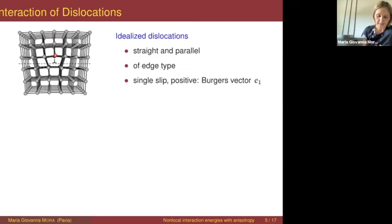The distortion is localized around this line going through this point and orthogonal to your screen — this is what is called the dislocation line, the line defect in this particular case.